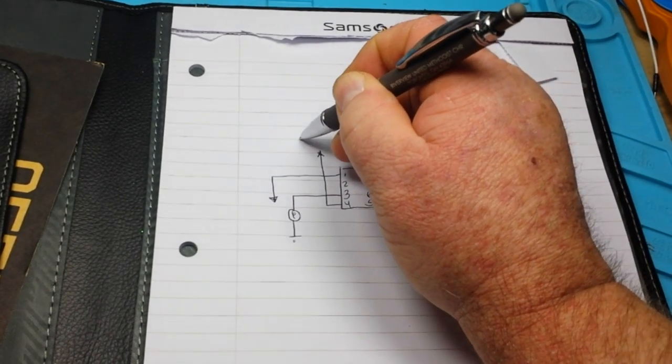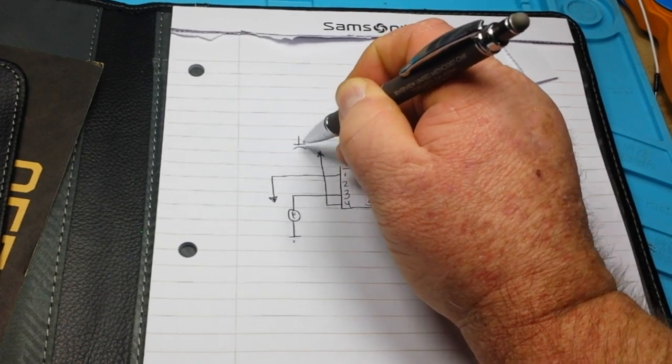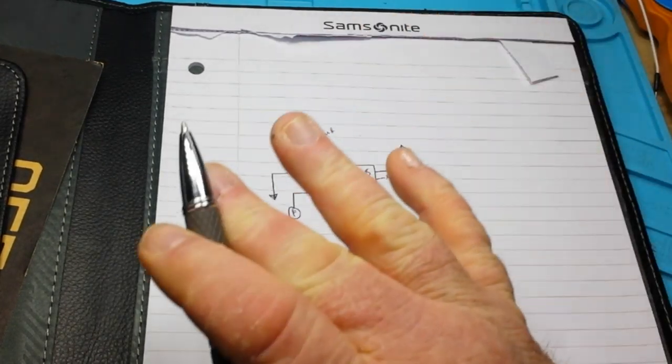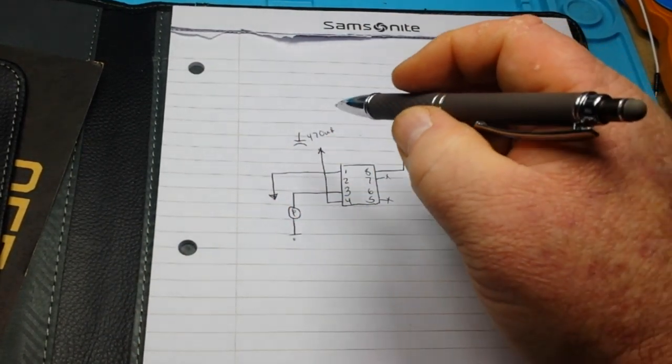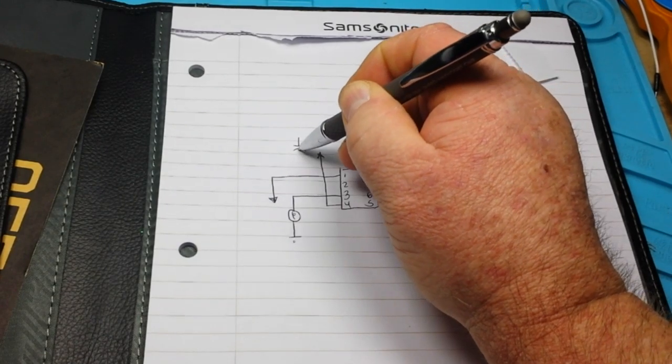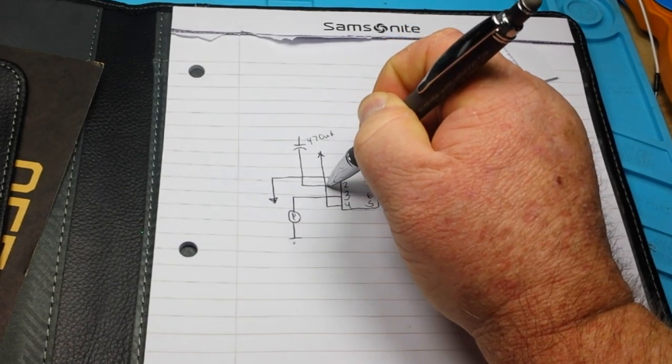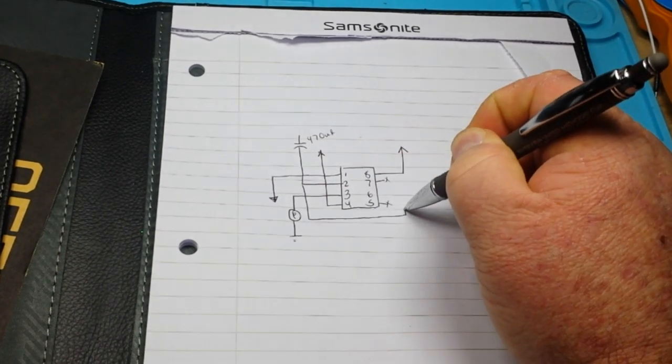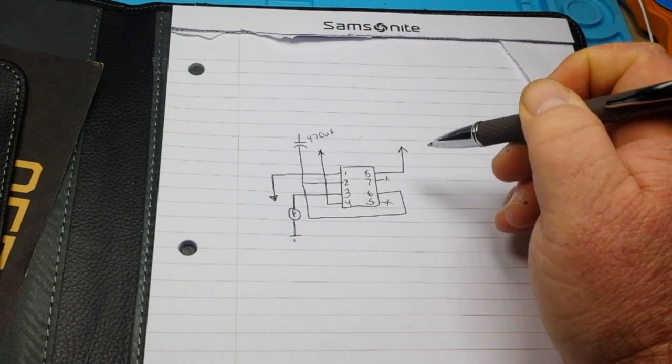Now we're going to bring over a capacitor, electrolytic capacitor. In this case we're going to use 470 microfarad. Choose the value for the delay time you want. And that's going to come into pin 2. And pin 2 then is going to go over to pin 6. It's our trigger pin.